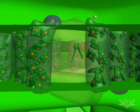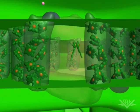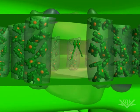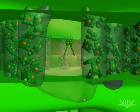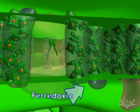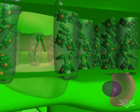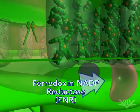It is here that photons again energize each electron and propel their transfer to ferredoxin. Ferredoxin then transfers the electrons to the ferredoxin NADP reductase, also known as FNR.